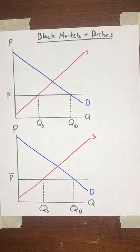All right, let's talk about the next effect of a price ceiling, which is black markets and bribes.